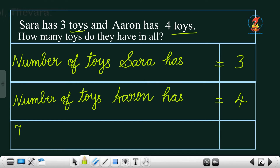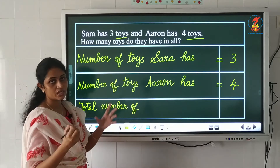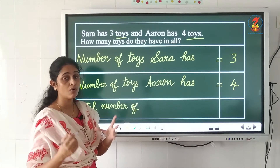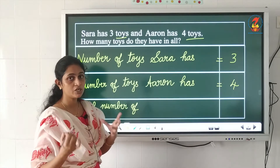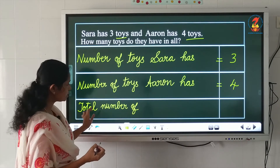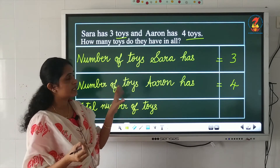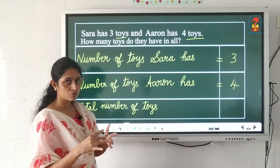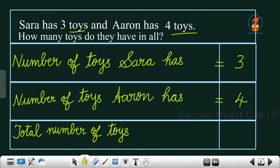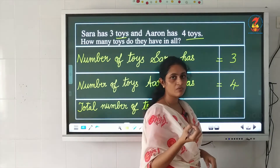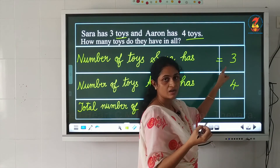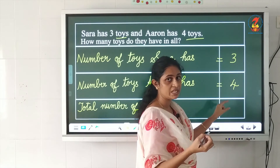Total number of — total means we are taking it together. You are asked to find how many toys they have in all, that is, Sarah and Aaron's toys together. So write: total number of toys. When we take numbers together, we have to add. In vertical addition, the plus sign is written before the second number.